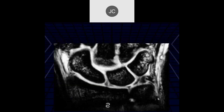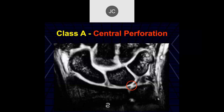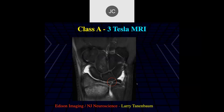Here I see increased signal in that central disc — the TFCC. So this was another Class A central perforation. And here's one on one of the early 3T images showing a little central perforation.